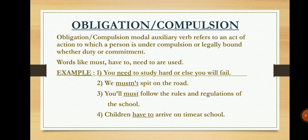The fifth type is obligation or compulsion. Obligation or compulsion modal auxiliary verb refers to an act of action to which a person is under compulsion, or a legally bound duty or commitment. For example, if a teacher tells you to compulsorily complete your book, that is a compulsion. Or if you have committed to someone that tomorrow you will meet them, that is a commitment. Words like must, have to, and need to are used. For example: 'You need to study hard or else you will fail' — 'need to' shows obligation.